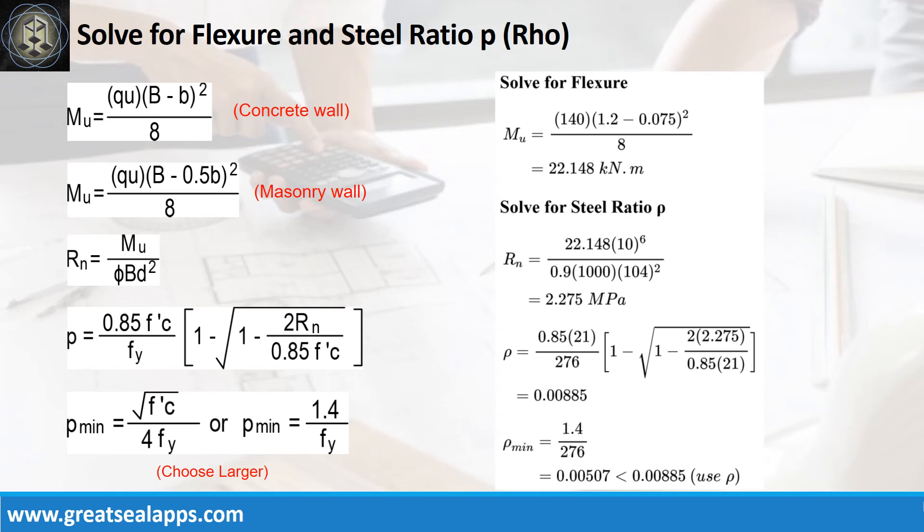Given ultimate soil pressure equals 140kPa, footing width equals 1.2 meters and masonry wall thickness equals 150mm, the maximum moment is 22.148kN per meter.